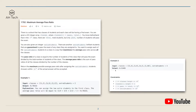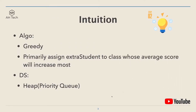The length of the classes array can go up to 10 to the power of 5. The intuition to solve this question is a greedy algorithm — greedy means that we will primarily assign extra students to a class whose average score will increase the most.